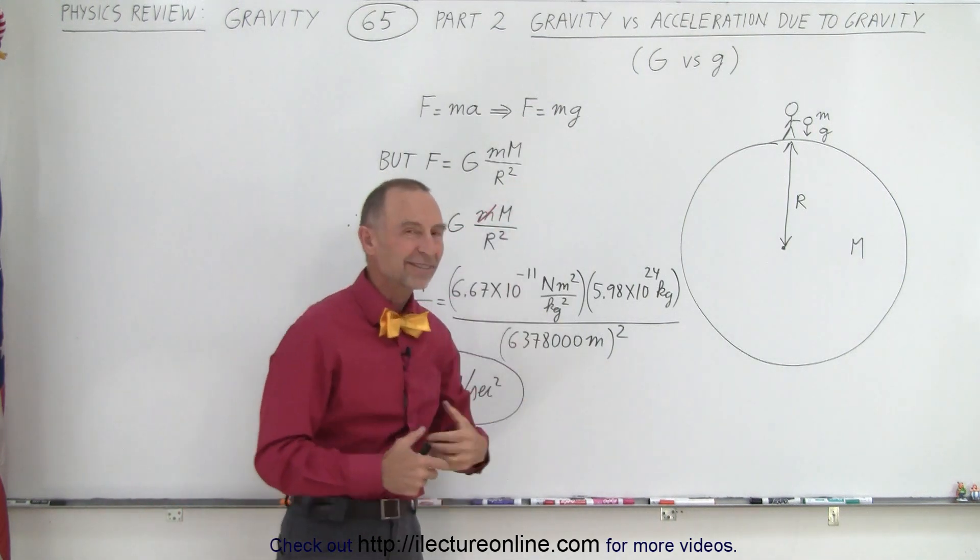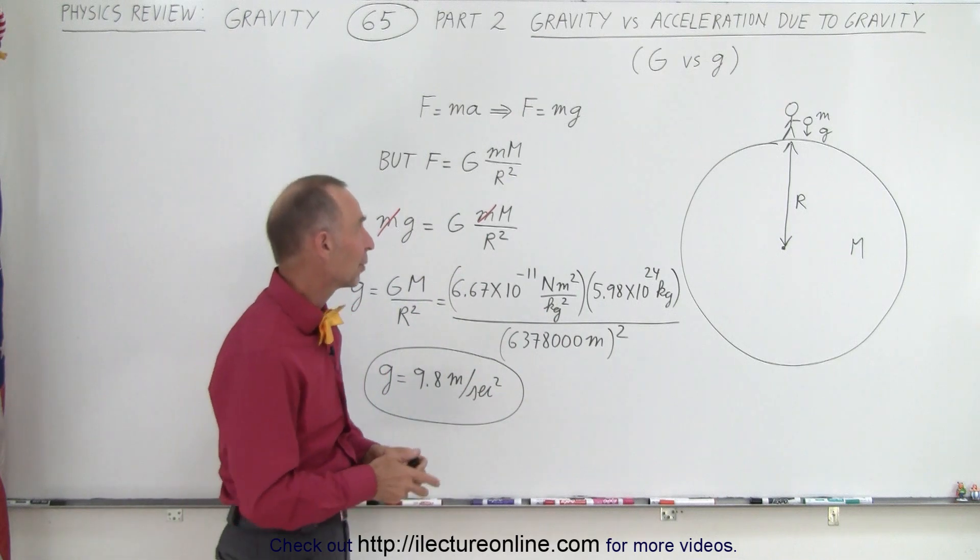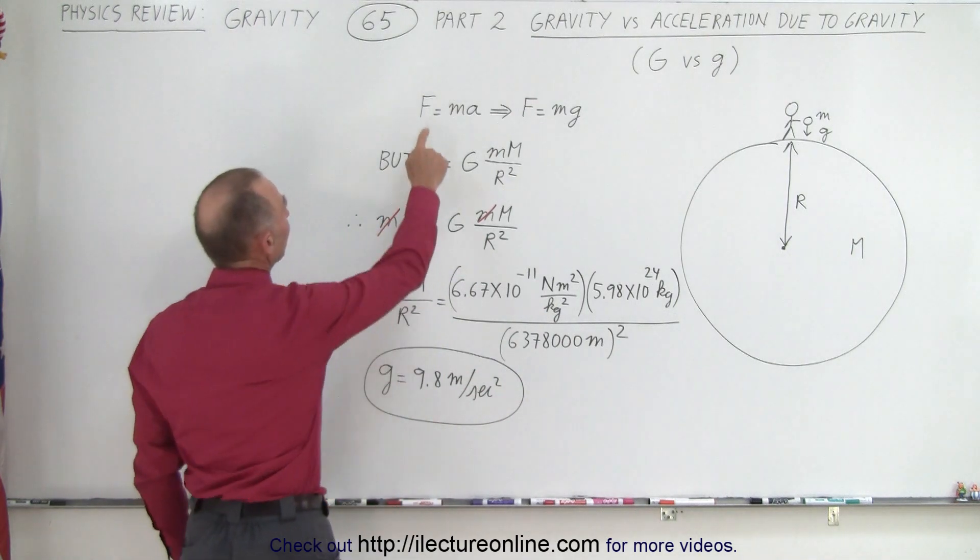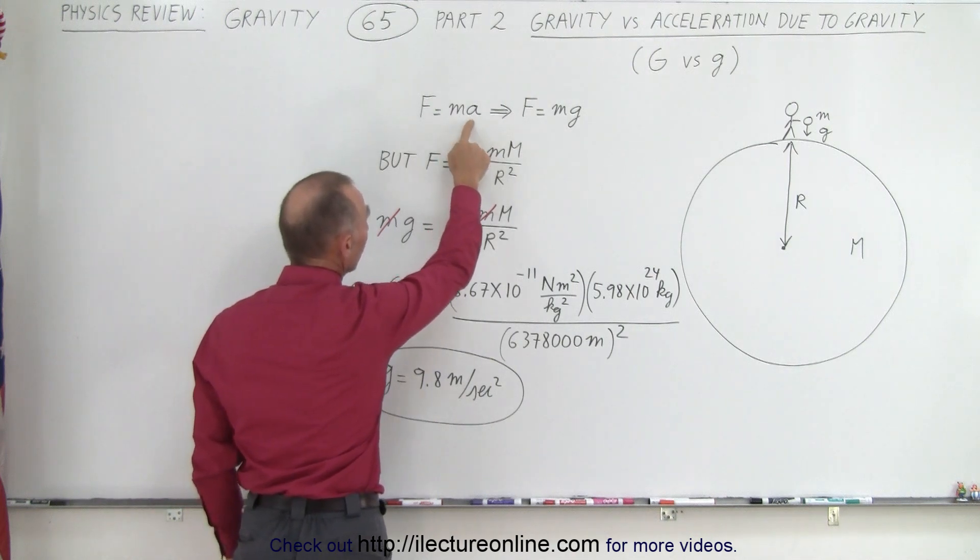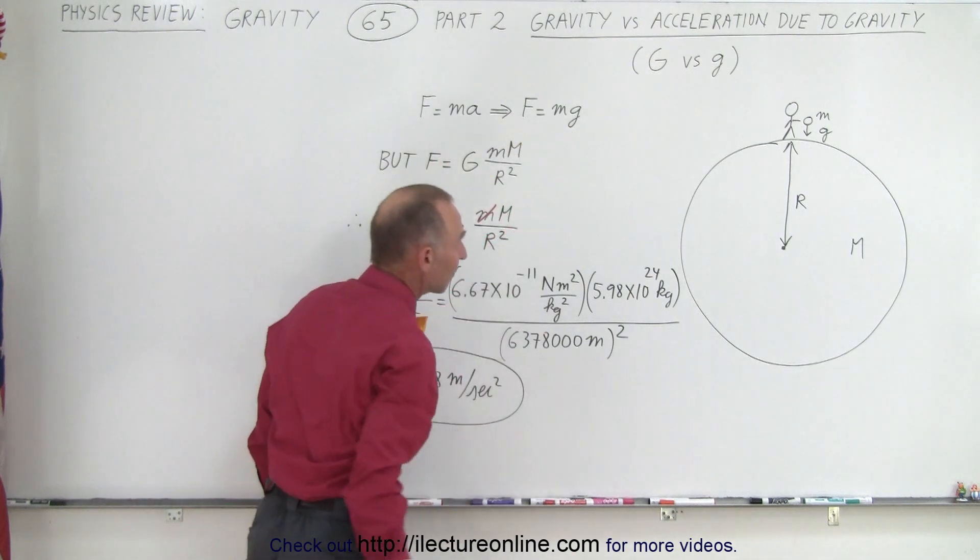Little g represents acceleration due to gravity. If we go back to Newton's second law, F equals ma, instead of using a for acceleration, we can use g for the acceleration due to gravity.